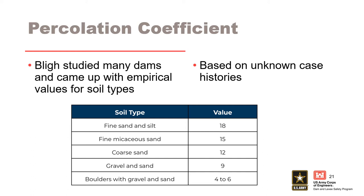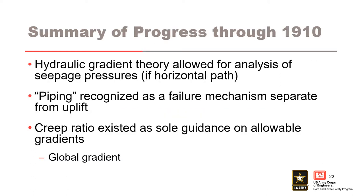It should also be noted that Bligh's paper was the sole publication at this point in time. Therefore, it became widely used globally and formed the basis for design of many dams, including many early dams in the US. If we summarize progress through 1910: hydraulic gradient theory allowed for a means of crude seepage analysis to assess pressures, at least if the seepage path was predominantly horizontal. Piping was recognized as a failure mechanism separate from uplift, and the creep ratio existed as the sole guidance on allowable gradients for determining safety against piping.